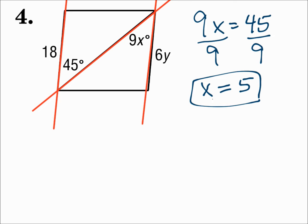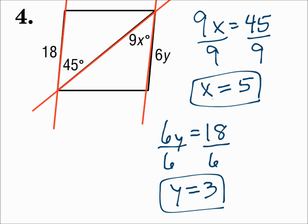Now to make them congruent: 6y has to equal 18. When you divide by 6, y is 3. Making alternate interior angles congruent gives parallel sides, and making the side lengths congruent gives one pair of sides that's parallel and congruent, which makes a parallelogram.